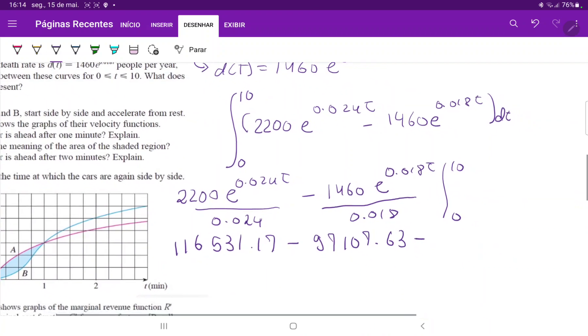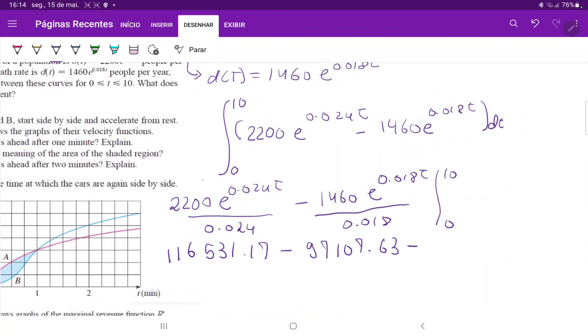And then minus 1.63, and then minus, let's evaluate it at 0. When we evaluate it at 0, it just becomes 1. So e to the 0 power times 2200, so minus 91666.67, and then minus,